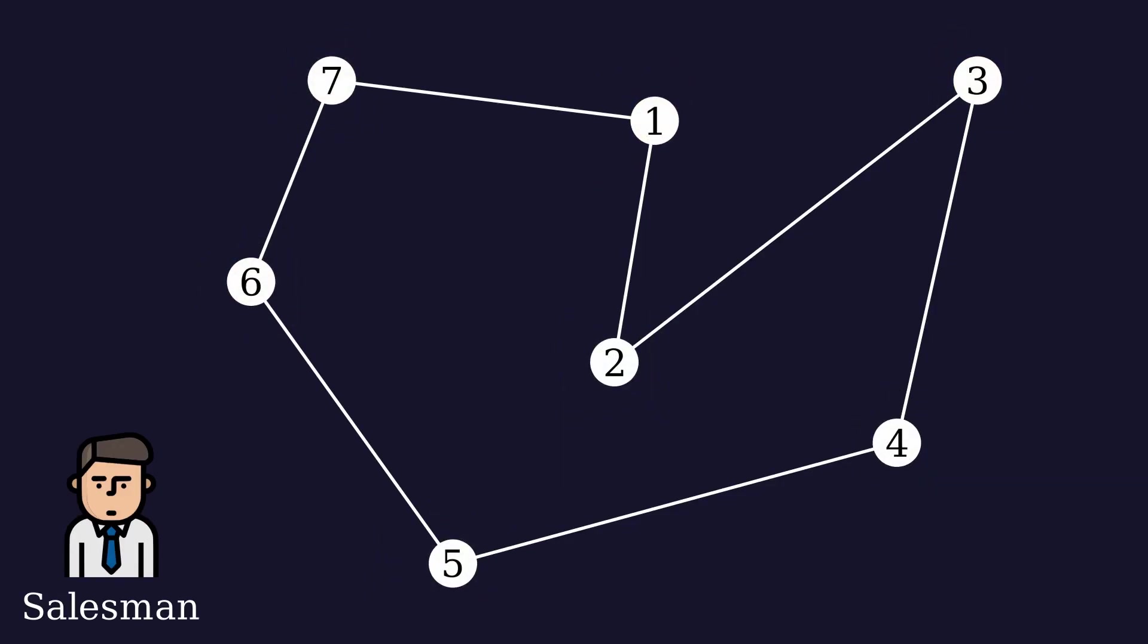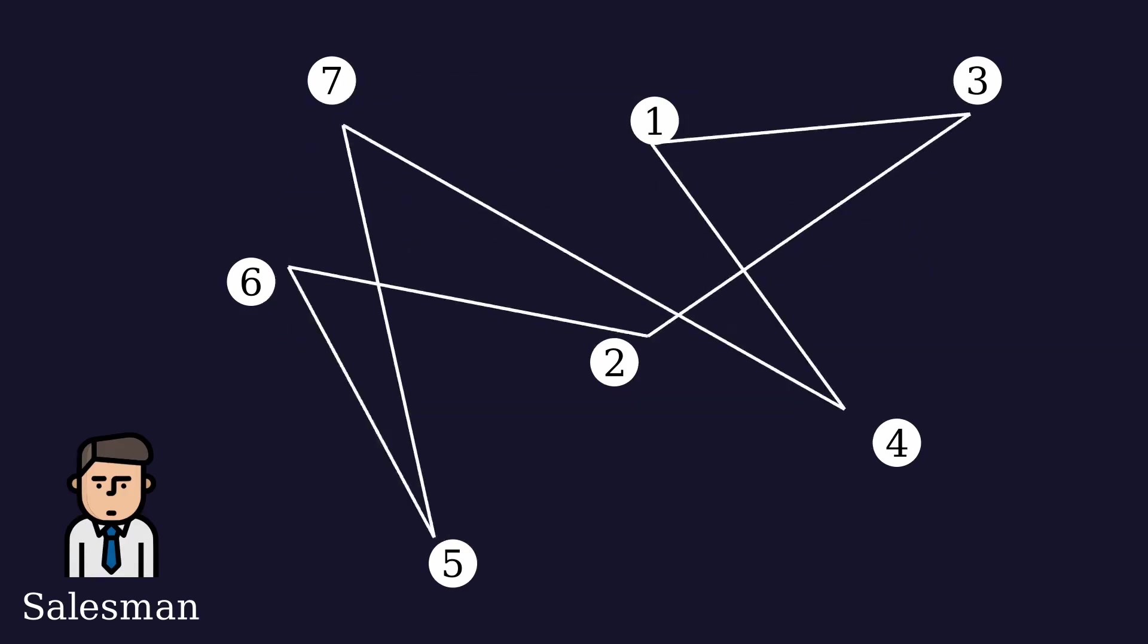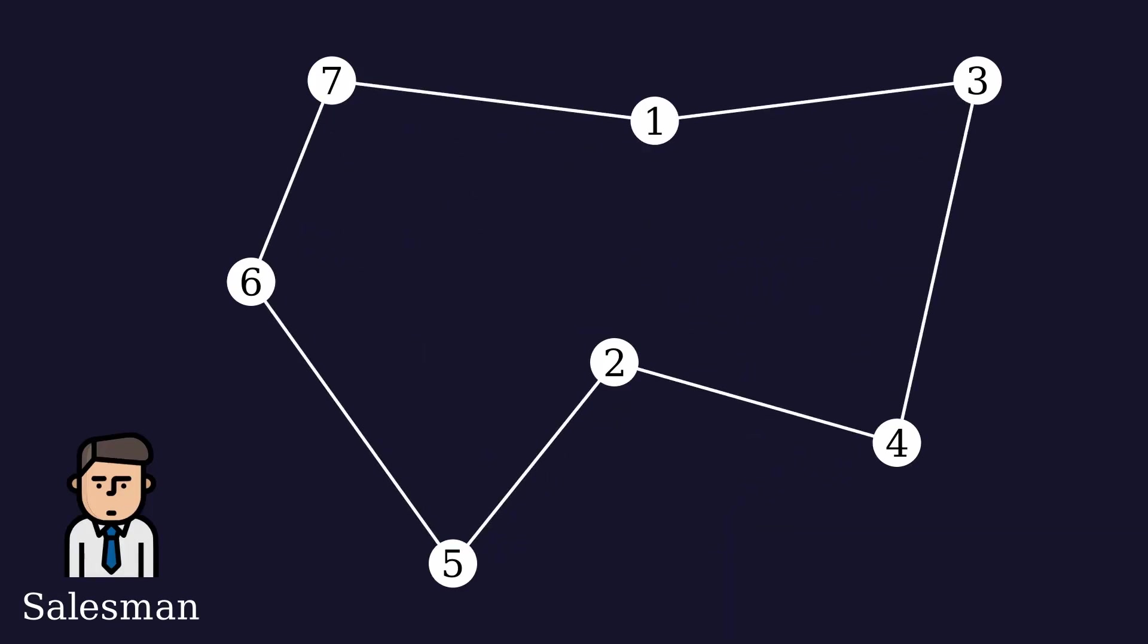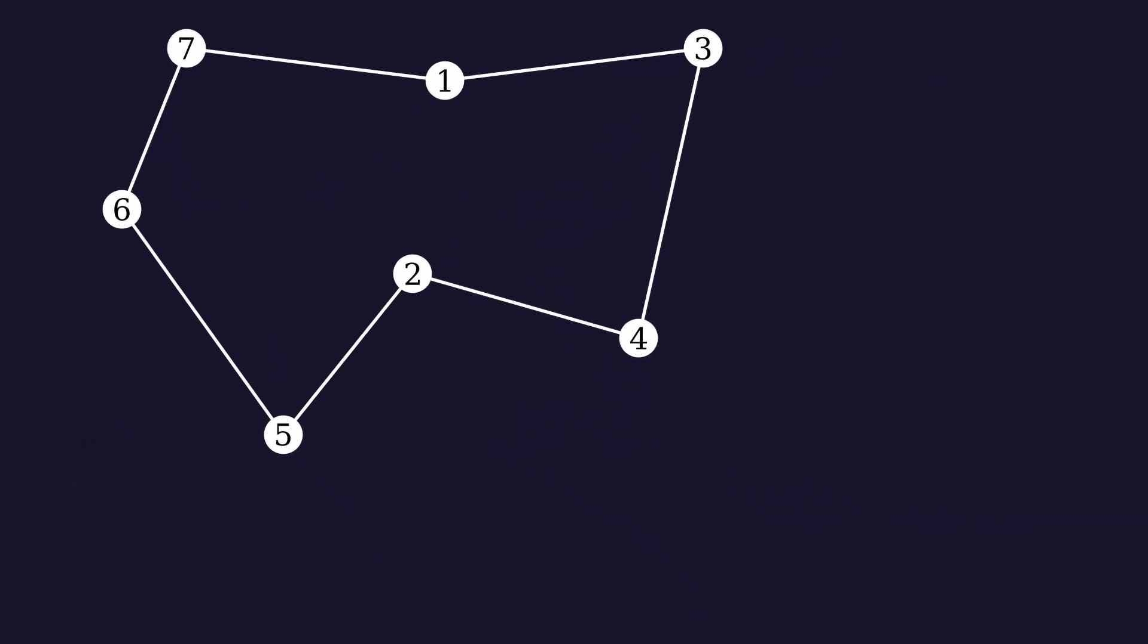One way to approach this problem is by calculating the length of all possible paths and then choosing the shortest one. But how many possible paths are there? If we start from any city, we have six options for the next city to visit. Once we've chosen the second city, we have five options for the third, and so on.